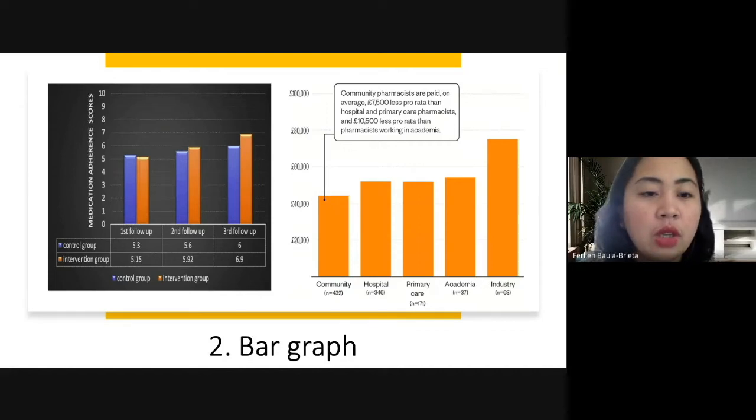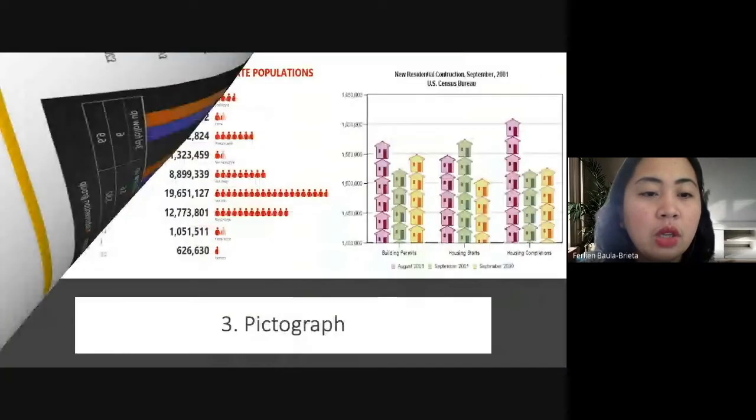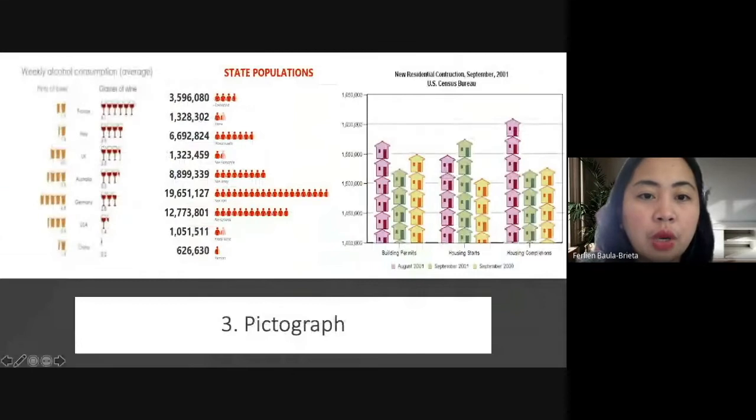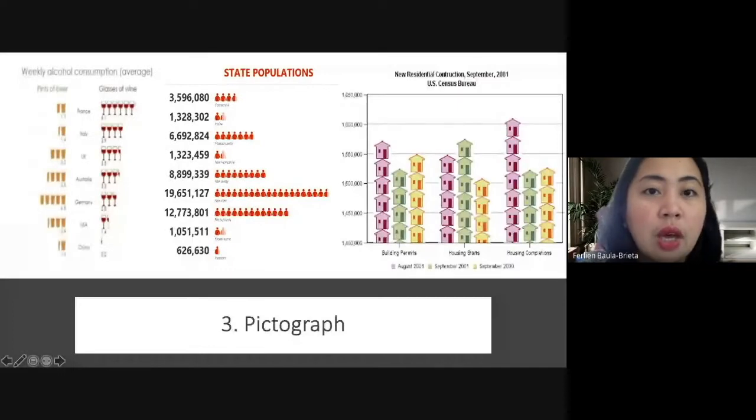Okay, now on the other hand, the third example is our pictograph. A pictograph is a very interesting type of graph because from the word itself, it has pictures or it uses picture symbols to convey the meaning of the statistical information.